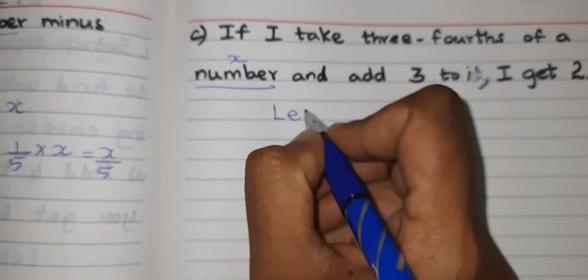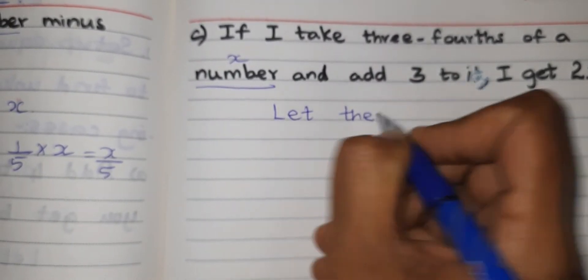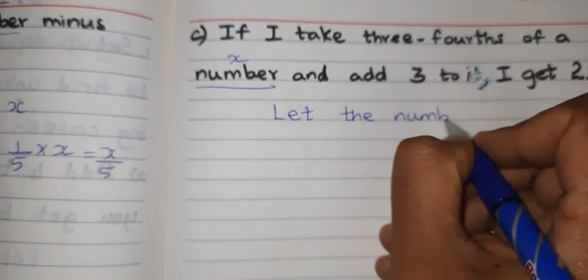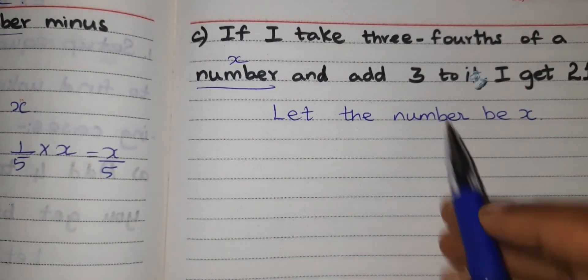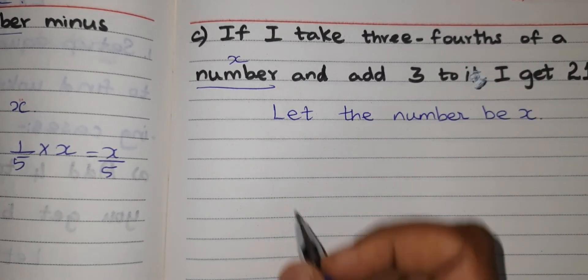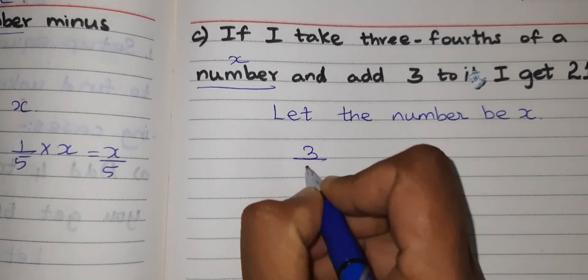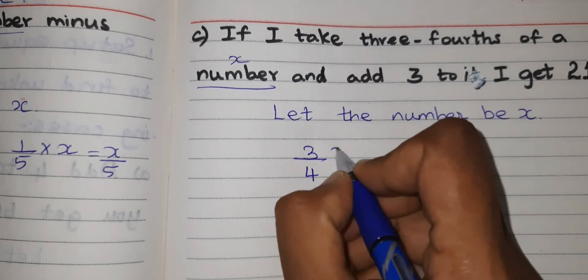Here also let me consider the number be X. So first step, let the number be X. Three-fourths of a number means 3 by 4X.